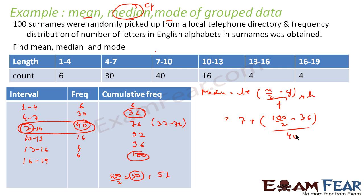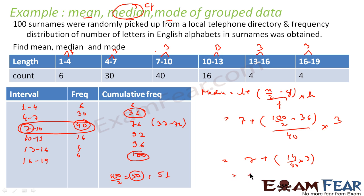The value of h = 3, since the class interval is 3 (e.g., 10 − 7 = 3, 13 − 10 = 3). Substituting: Median = 7 + (50 − 36) / 40 × 3 = 7 + 14/40 × 3 = 8.05. So the median is 8.05.